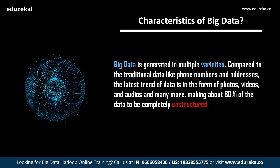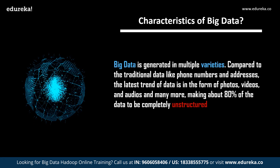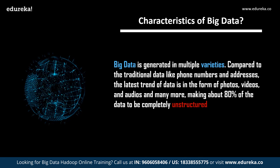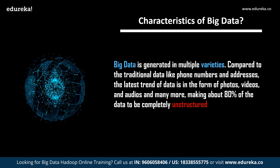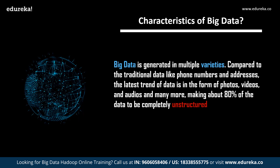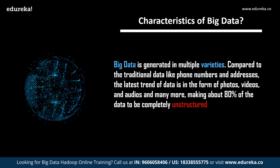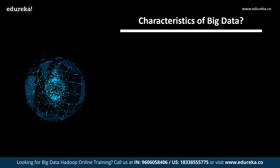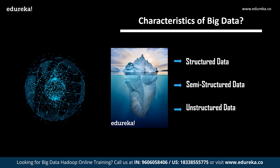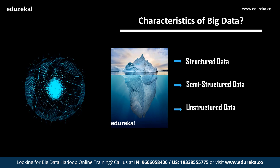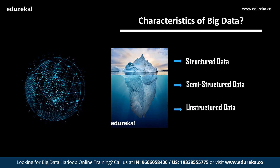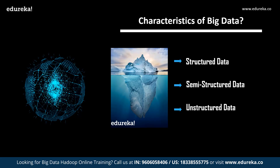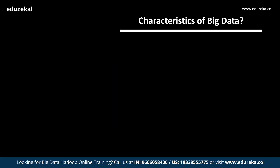Next is variety. Big data is generated in multiple varieties compared to traditional data like phone numbers and addresses. The latest trend of data is in the form of photos, videos, and audios, making about 80% of data completely unstructured. Structured data is just the tip of the iceberg — there is a whole lot of data to be dealt with beyond the structured type.